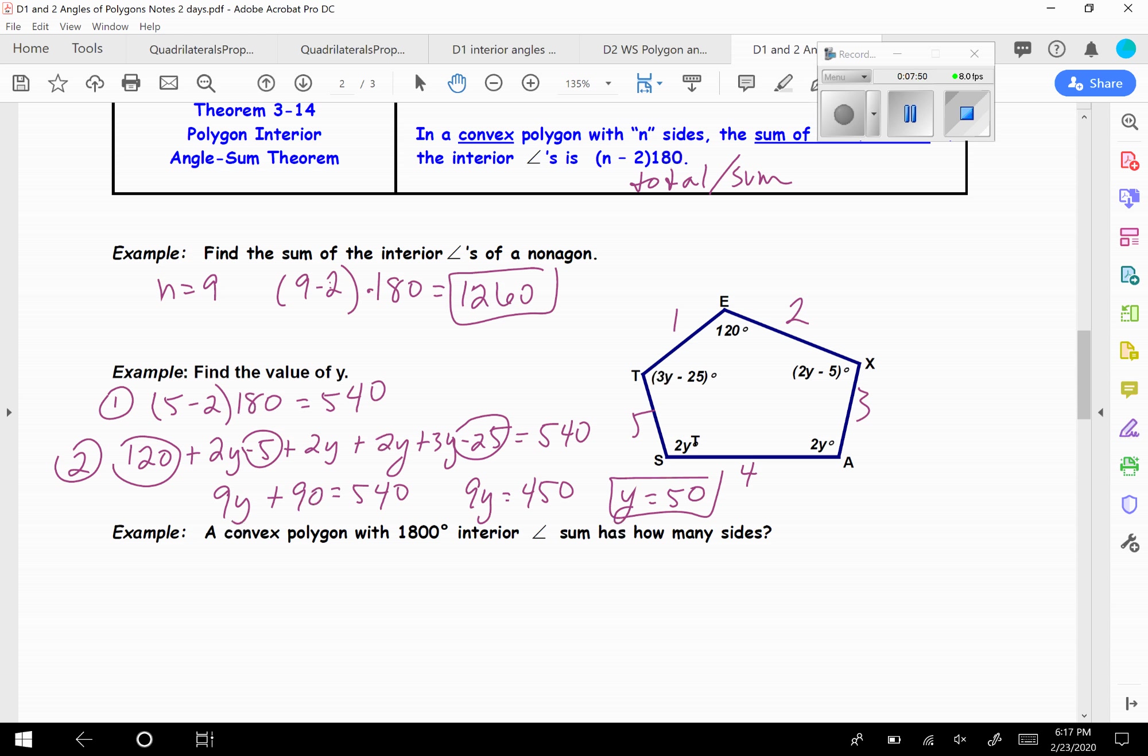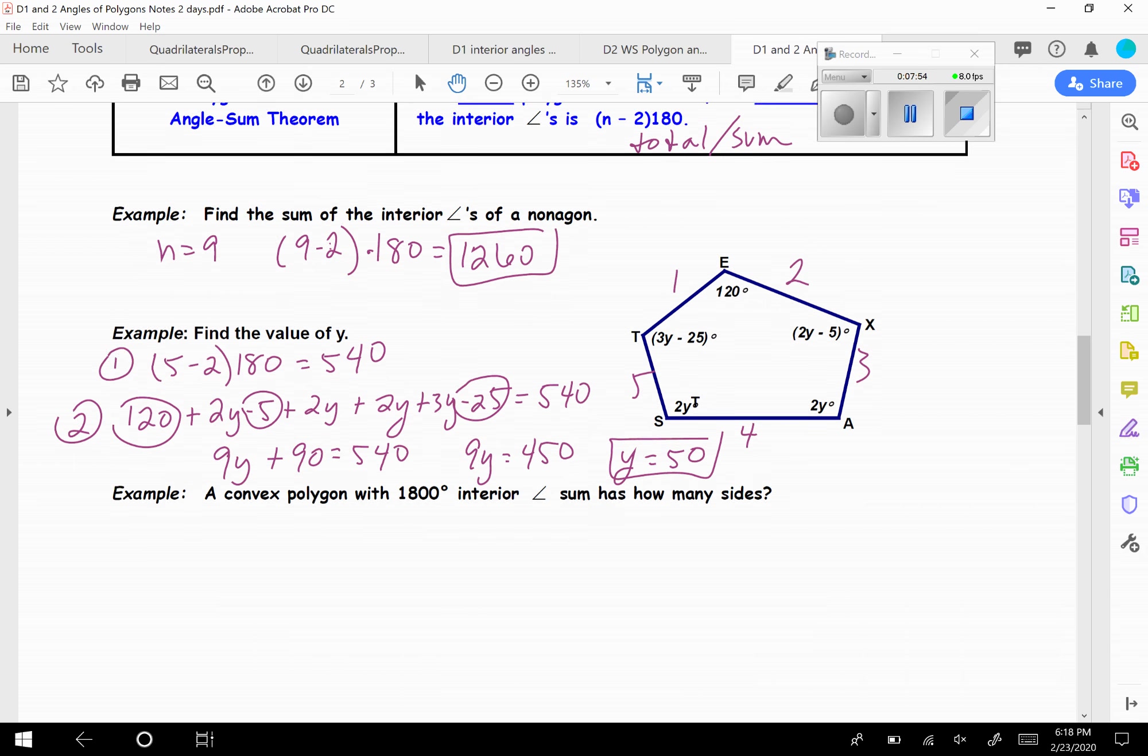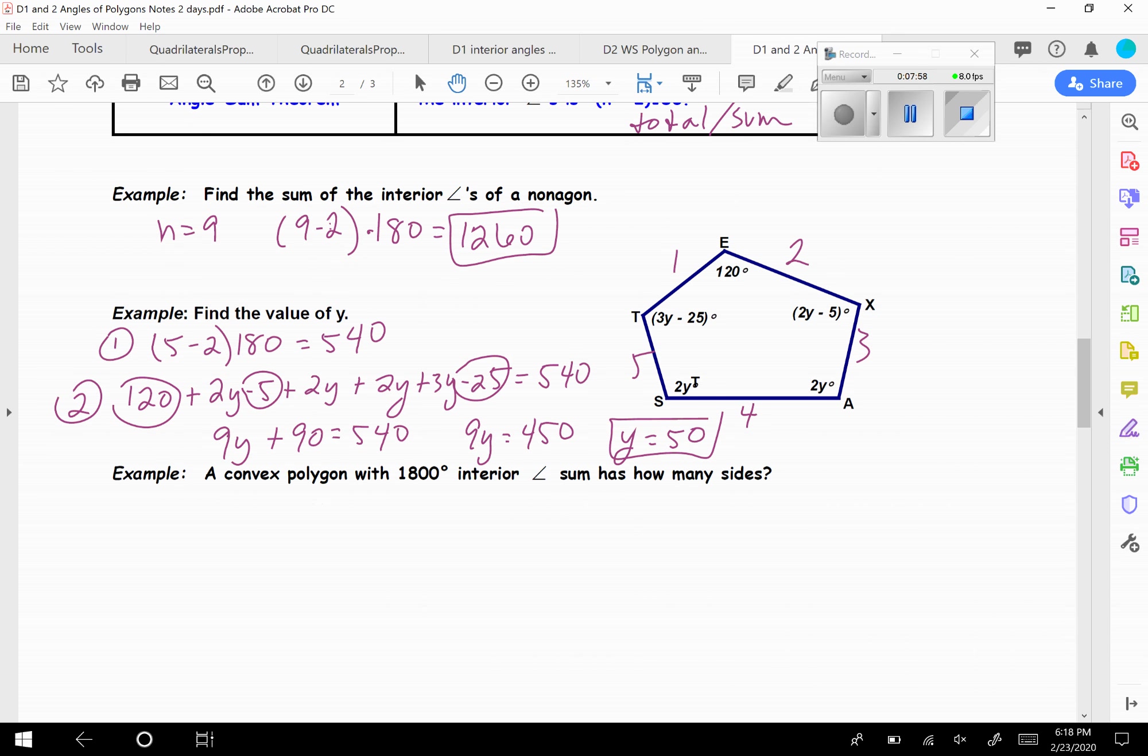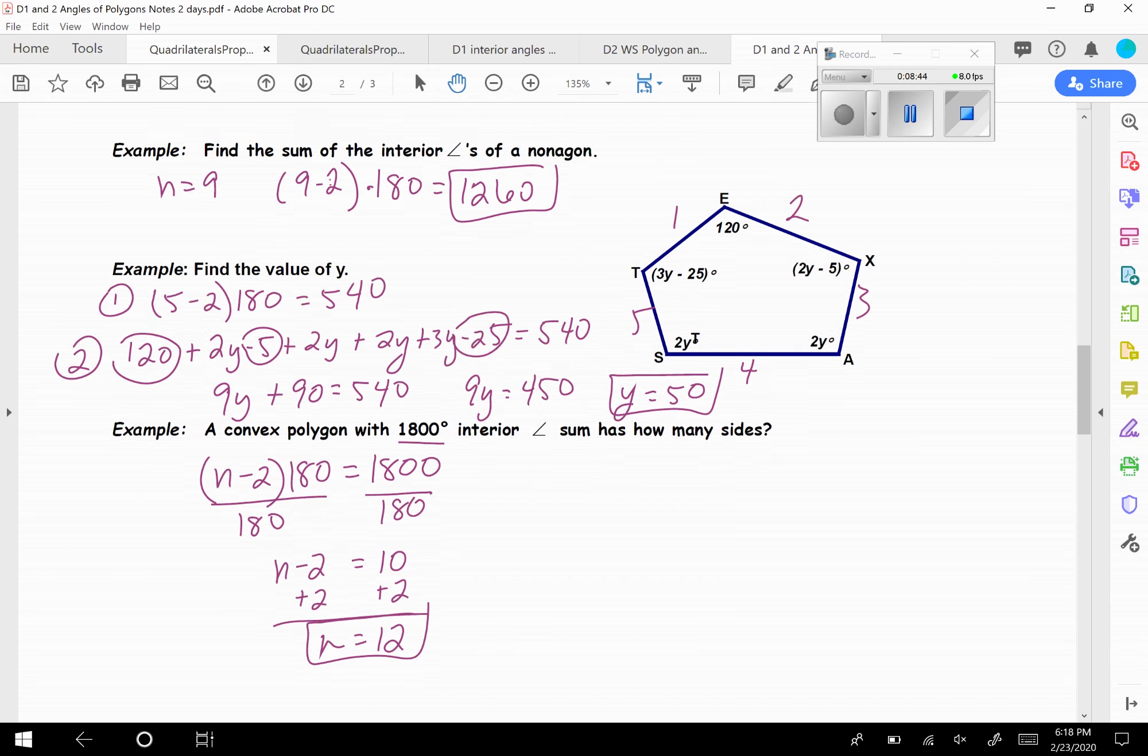So whenever you have to write the equations, you have to do step 1 of actually plugging in the total formula and finding out what they all should add up to. Next example. A convex polygon with 1,800 degrees interior angle sum has how many sides? So basically, they've done N minus 2 times 180, and it came out to be 1,800. So now we have to solve the formula backwards to get N. So we have to get rid of the stuff on the outside here. So divide by 180. So N minus 2, and if you do 1,800 divided by 180, you get 10. And then just add 2. So N is 12.